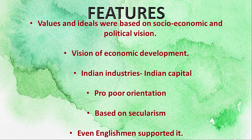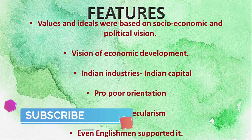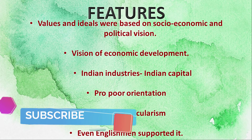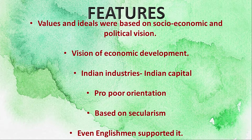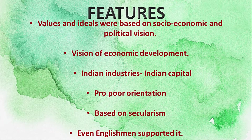Discussing some more core features of our national movement: it was based on certain values and ideals grounded in a broad socio-economic and political vision — secularism, civil liberty, democracy, an egalitarian social order, and so on. Our national movement popularized democratic values like representative government and adult franchise, which was unique. A country like India gaining independence in 1947 — no one would have thought it would grant universal adult suffrage to its citizens and adopt a democratic form of government.